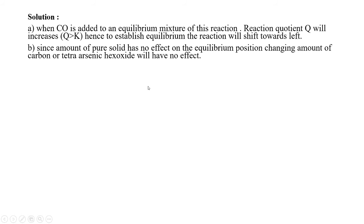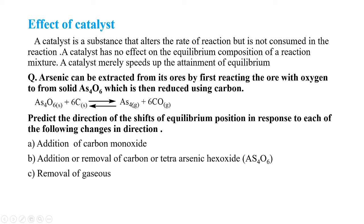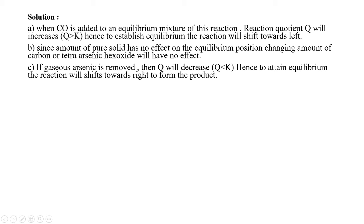When gaseous arsenic is removed, the numerator value decreases, so Q decreases. Since Q is less than K, the equilibrium shifts towards the right — the forward reaction is favoured.